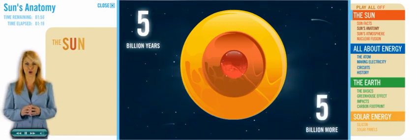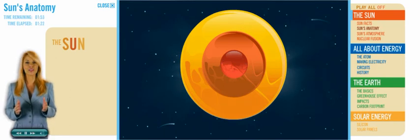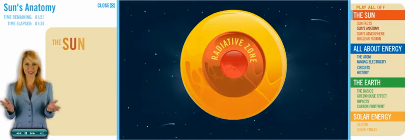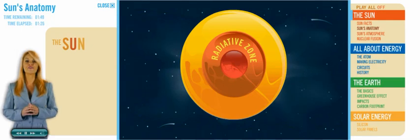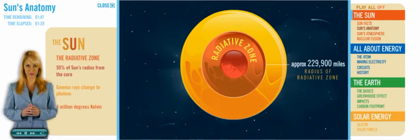Moving out from the core, we find the radiative zone, where the Sun transfers its energy out into space. This zone is about 55% of the Sun's radius from the core.